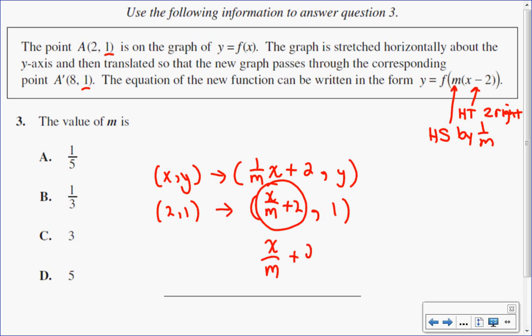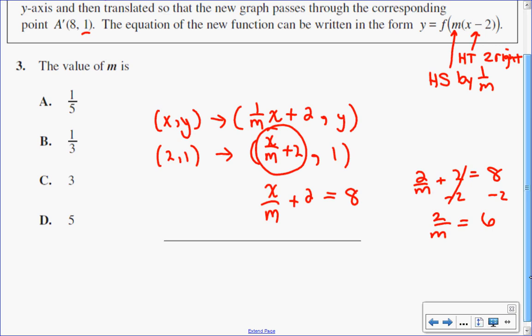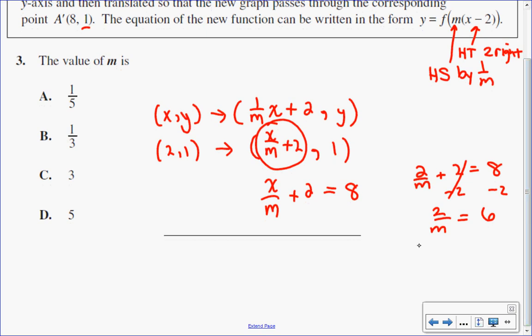So x/m + 2 is going to equal 8. Now I know x, the original point, is 2, so I can algebraically solve this. So 2/m + 2 equals 8. Subtract 2 from both sides and I get 2 divided by m equals 6. So to solve this algebraically, I could just multiply both sides by m. And I would get 2 equals 6m and divide both sides by 6. So I know m is 2 over 6 or in lowest terms will be 1 over 3. So I know that is the answer.